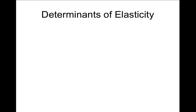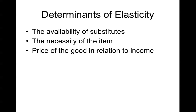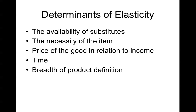Now we have to think about the determinants of elasticity — what makes a product more elastic or more inelastic. The first one is availability of substitutes. The next is the necessity of the item. The third is the price of the good in relation to income. The fourth is time. And the fifth is the breadth of the product definition. We're going to go through each one of these in turn.